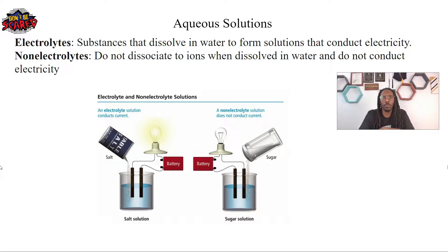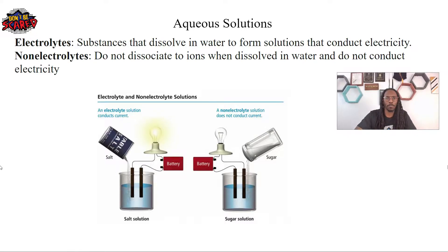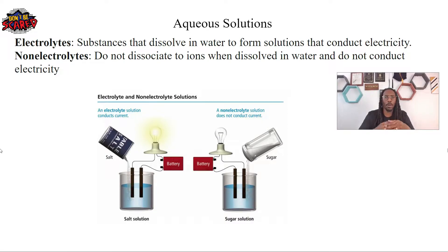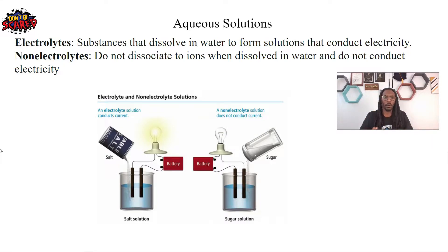Now let's talk about some more stuff concerning aqueous solutions. We've got to add another layer here. The first thing I'm going to talk about is electrolytes and non-electrolytes for all aqueous solutions. So electrolytes are basically substances that dissolve in water to form solutions, and they're able to do one particular thing — they're able to conduct electricity.